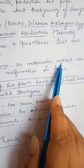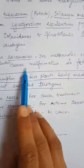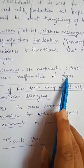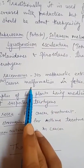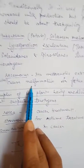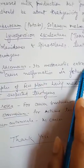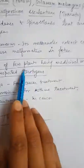The next one is Asparagus racemosus, known as Shatavari. Everyone knows it is an immunomodulator drug. However, its methanolic extract can cause malformation in the fetus — meaning birth defects are produced if we use its methanolic extract during pregnancy.